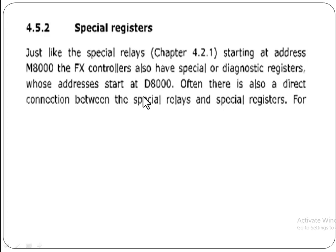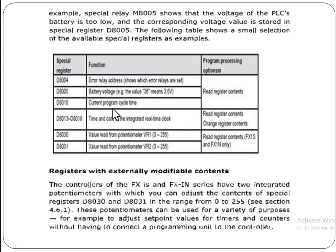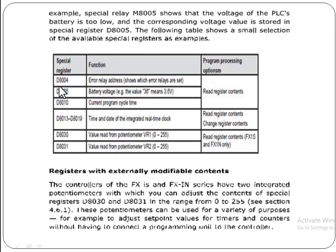Often, there is also a direct connection between the special relays and special registers. For example, special relay M8005 shows that the voltage of the PLC's battery is too low, and the corresponding voltage value is stored in the special register D8005. The following table shows a small selection of the available special registers as an example.